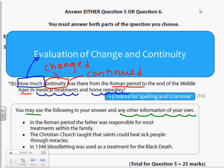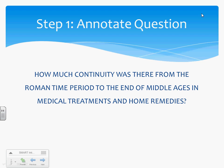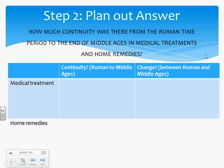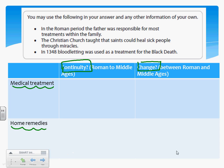Now that we've annotated the question — which I'd recommend you do in the exam so that you're well prepared — I would recommend you plan out your answer. Part of your time in the exam should be used for planning. You can see the focus of the question: medical treatments and home remedies. Because it's asking about continuity, it's implying you need to talk about change too. Find in your revision guide and in your notes where you have information about medical treatments and home remedies, then pause the video and fill in the planning chart.